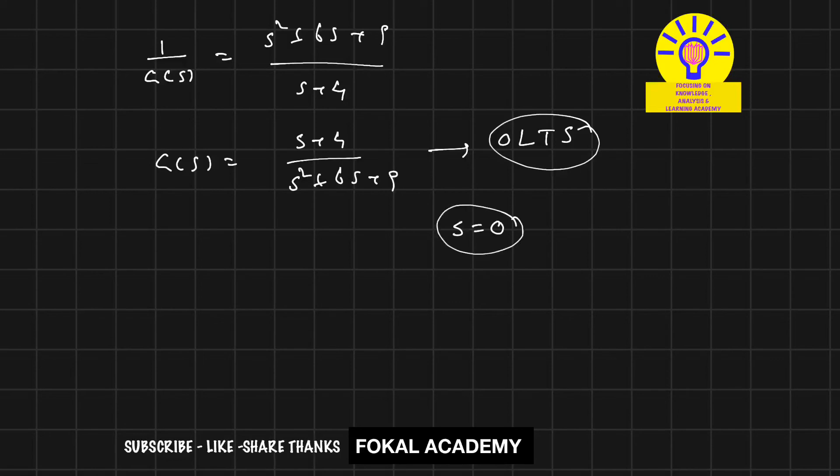Now substitute s equals 0: that is 0 plus 4 divided by 0 plus 0 plus 9, which equals 4 by 9. So this is the DC gain for open-loop transfer function.